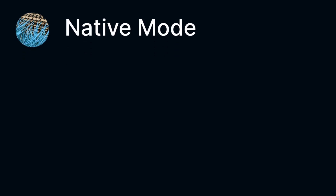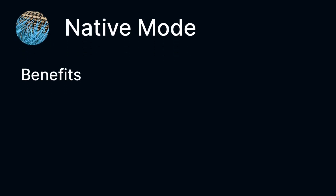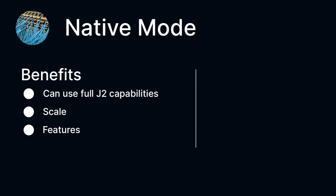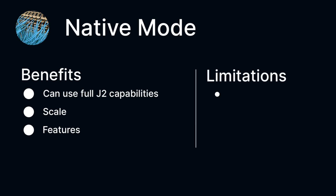The second operation mode is called native. It can be enabled when your router is exclusively populated with Jericho 2 chipsets. With this mode it's now possible to go beyond what Jericho Plus offered, both in terms of scale and features. I like to say we unleash the NPU capabilities.